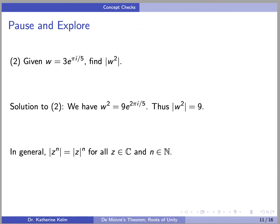In general, |z^n| = |z|^n. This follows easily from de Moivre's theorem. Or you can prove it from the more general fact that for complex numbers z and w, |zw| = |z|·|w|, which is easy to prove using polar form, and then apply induction on n.